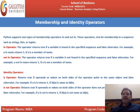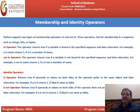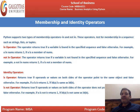Identity operators are 'is' and 'is not'. The 'is' operator returns true if the values on both sides point to the same object. For example, A is B returns true if and only if both A and B have the same value — if A equals 10, then B must also equal 10 so that the ID of A is the same as the ID of B. The 'is not' operator returns true if the operands on both sides do not match.